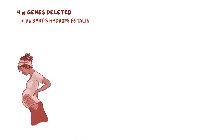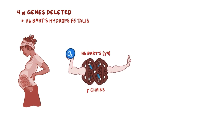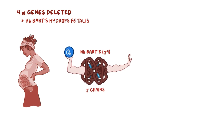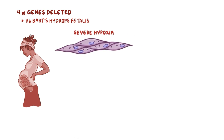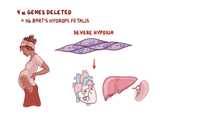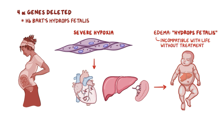Finally, if all four alpha genes are deleted, it results in HbBart's hydrops fetalis. The problem here begins during fetal life, where gamma chains form tetramers in the absence of alpha chains, called HbBart's gamma-4. It has super high affinity for oxygen, about 100 times that of normal hemoglobin, so the tissues get no oxygen, resulting in severe hypoxia. Severe hypoxia leads to high output cardiac failure and massive hepatosplenomegaly, resulting in edema all over the body, called hydrops fetalis. This condition is incompatible with life, and without treatment, the fetus usually dies in utero or soon after birth.